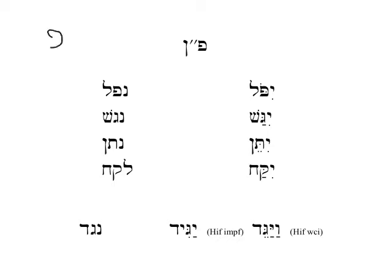The paradigm word for verbs is pa'al. We count the pe as the first root position, the ayn as the second, and the lamed as the third. So in the case where a nun is in the first position, we call it a pe-nun verb.